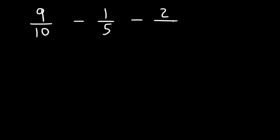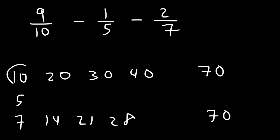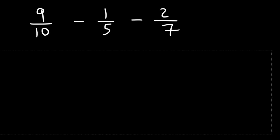Let's try another example: 9 over 10 minus 1 over 5 minus 2 over 7. Feel free to pause the video and work on that. Let's get a common denominator between 10, 5, and 7. Since 5 goes into 10, any multiple of 10 is a multiple of 5. Multiples of 10 go up to 70, and multiples of 7 also reach 70. If you multiply 10 and 7, you get 70, which is the common denominator we want.